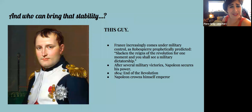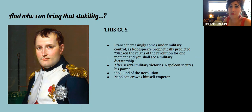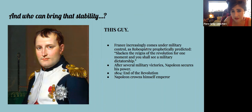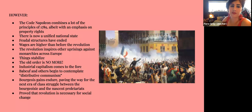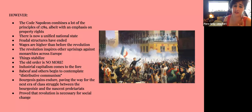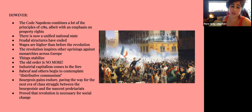Who could bring stability in that unstable situation? Napoleon. He had consolidated power through a series of military wins, and France increasingly came under military control — exactly as Robespierre had prophetically predicted: 'Slacken the reins of the revolution for one moment, and you shall see a military dictatorship.' Napoleon secured his power in 1804, which was declared the end of the revolution, and he crowned himself emperor. However, the Napoleonic Code combined many principles of 1789, albeit with emphasis on property rights. There was now a unified nation-state, feudal structures had ended, wages were higher than before the revolution, and the revolution inspired other uprisings against monarchies across Europe. Industrial capitalism came to the fore.